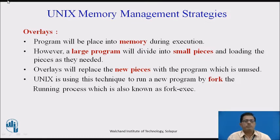The first program will be placed into memory during execution. However, a large program will be divided into small pieces and the pieces are loaded as they are needed. Overlays will replace unused pieces of the program with new ones. Unix uses this technique to run a new program by fork, the running process, which is also known as fork execution.